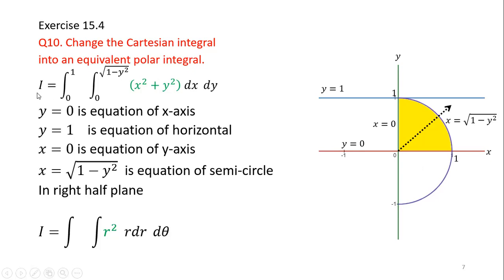To convert this Cartesian integral into a polar integral, we replace x² + y² with r² and dx dy with r dr dθ. The reason we replace x² + y² with r² is that, as mentioned earlier, x² + y² = r². And dx dy = r dr dθ in polar coordinates. Next we will calculate the limits.